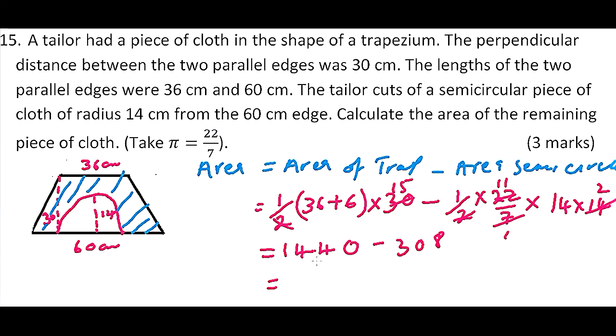So the remaining area is equal to, you subtract 308 from 1440 and you get 1132 centimeters squared. So that is how you work that question. And if you get the answer then you have scored 3 marks.